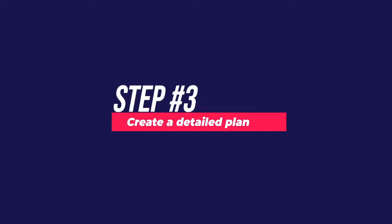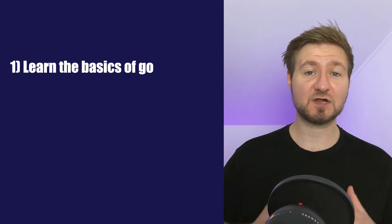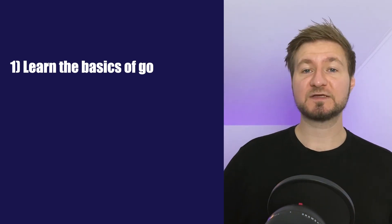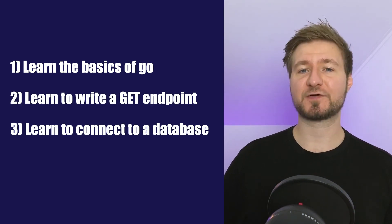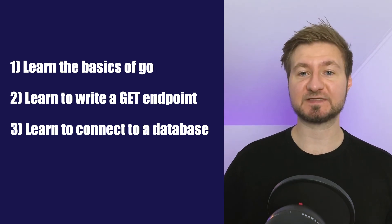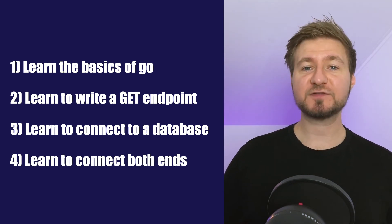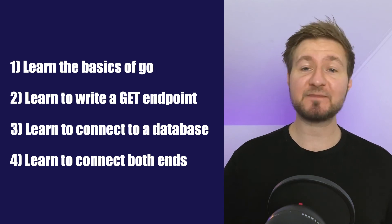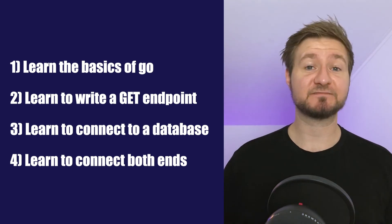Step number three is the next logical step after defining a clear goal, and that is to create a detailed plan to reach it. Let's take the example from before and assume that you don't know Go, but you know how a REST server works and how to connect to a SQL database. In that case, the plan might look as follows: first, learn the very basics of Go; second, learn to write a GET endpoint using Go; third, learn to connect to a Postgres database using Go; fourth, learn to connect your database code to the endpoint code — using Go.